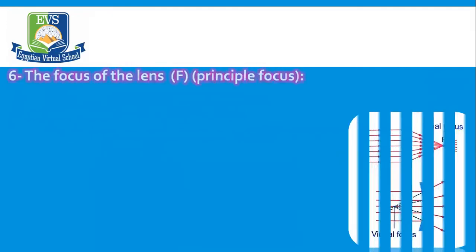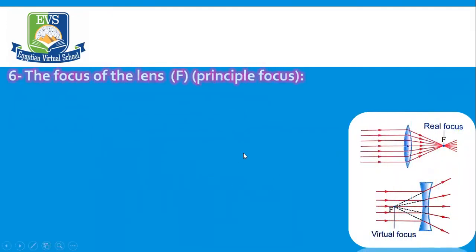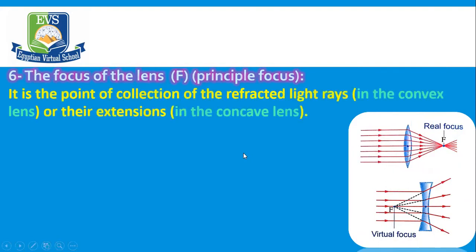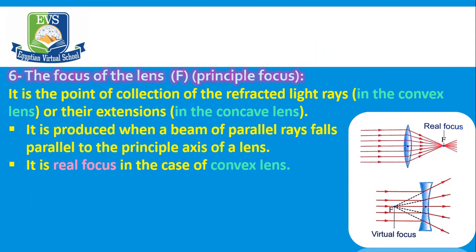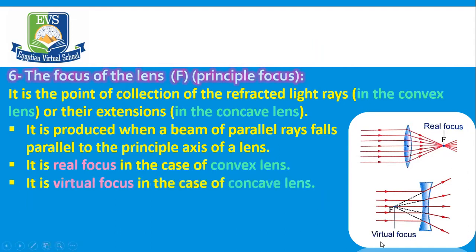Number six, the focus of the lens, F, also called the principal focus. It is the point of collection of the refracted light rays — in the case of convex lens, or their extensions in the case of concave lens. In the case of convex lens, because we can receive this focus on a screen, it is called real focus. In the case of concave lens, we cannot receive this focus on a screen, so it is called virtual focus.